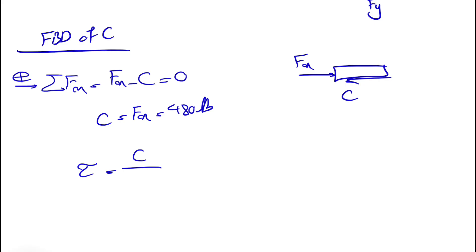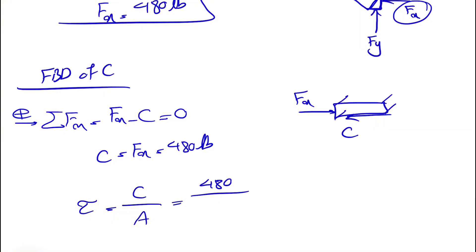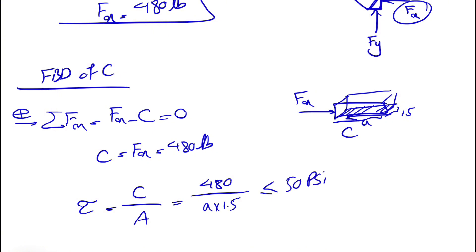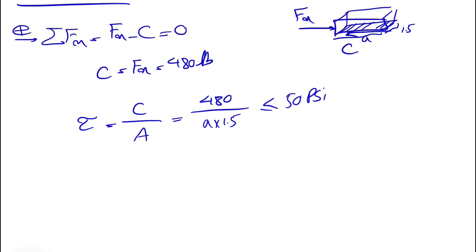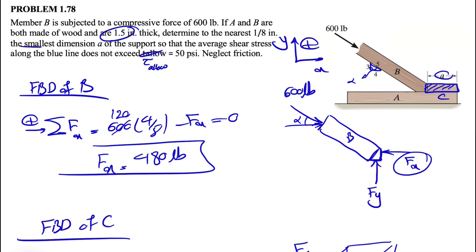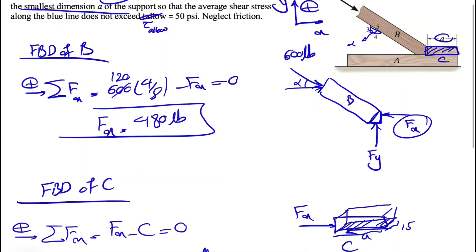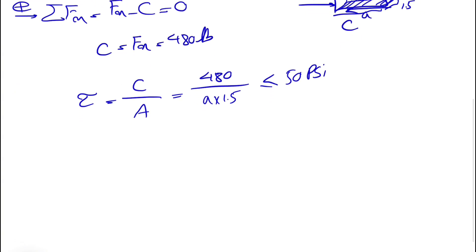What we are interested in is the shearing, which is force C over the area. The force C is 480 pounds, and the area is A times 1.5 inches (the thickness given in the problem). This shear stress cannot exceed 50 psi. To have the maximum allowable shear stress, we need the minimum (smallest) dimension A, which is exactly what the question is asking.